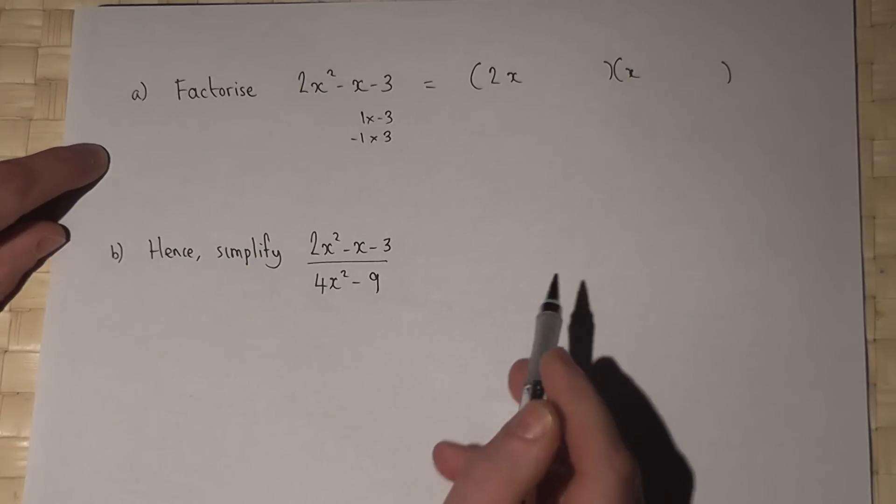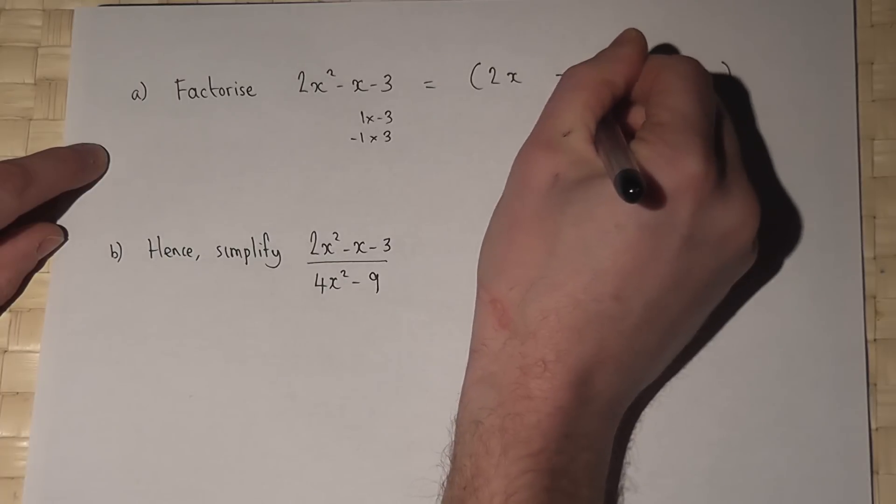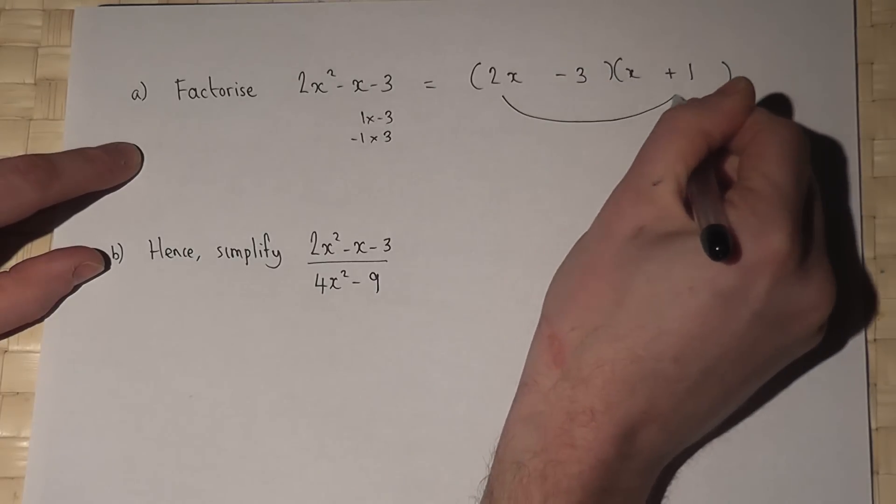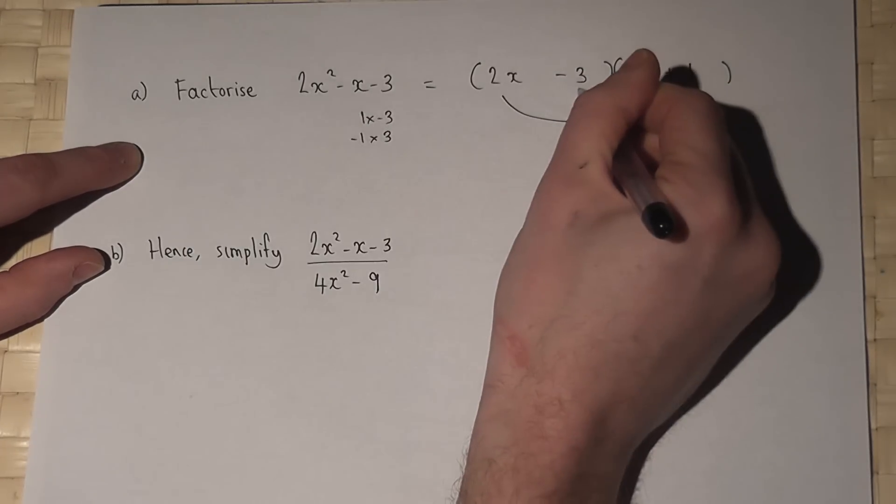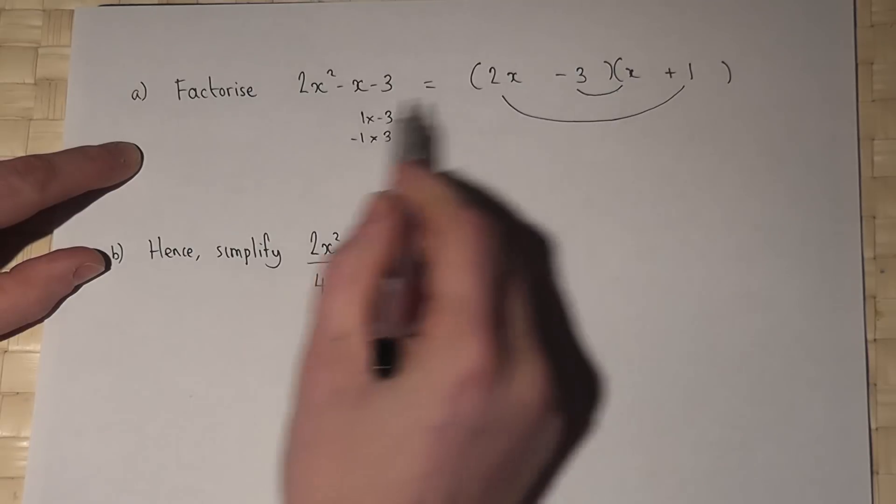Now then, if I put a plus 1 here and a minus 3 here, then this gives me a plus 2x and this gives me a minus 3x. And 2x take away 3x is minus x.